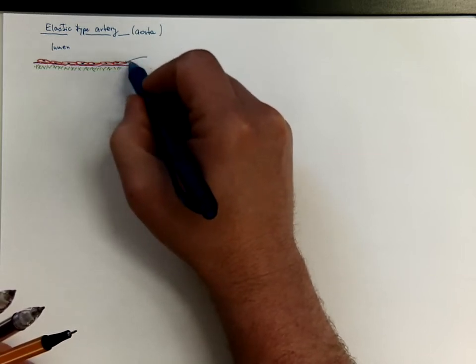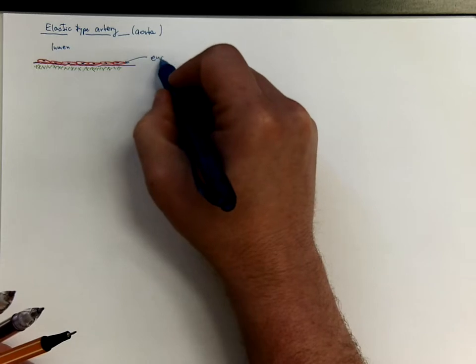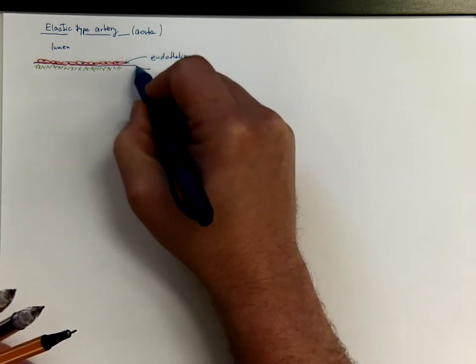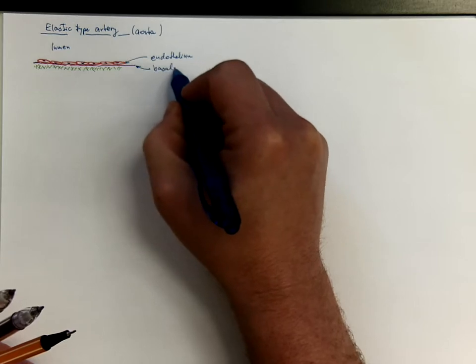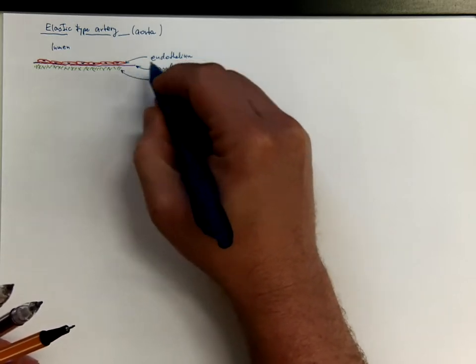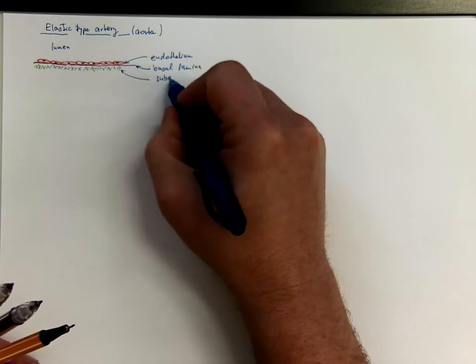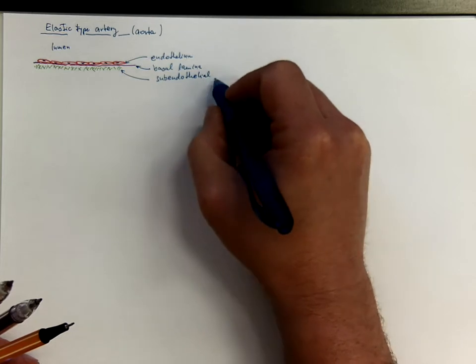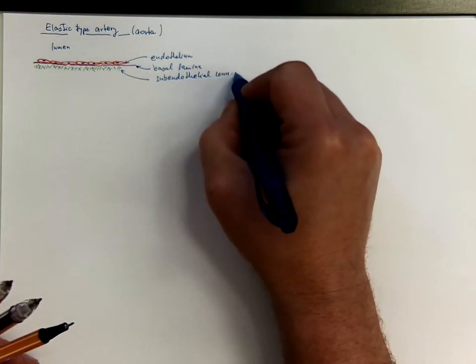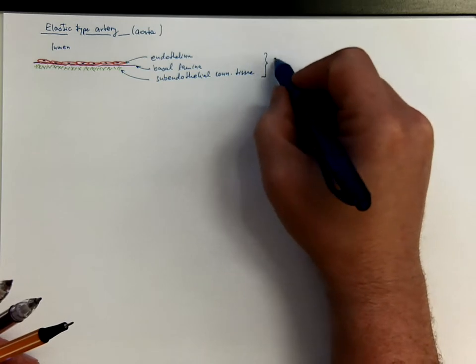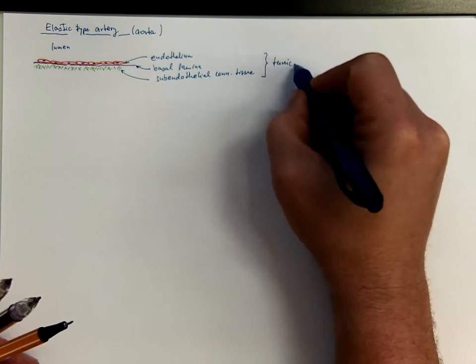But normally, we got here endothelium sitting on the basal lamina and subendothelial connective tissue. That is the layer called tunica intima.